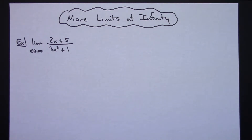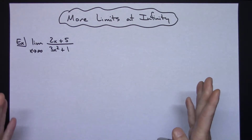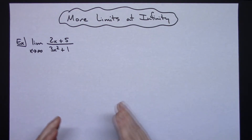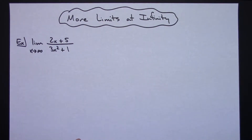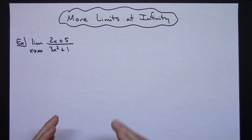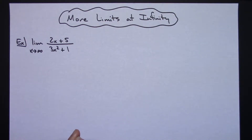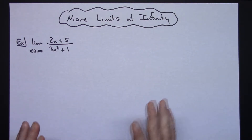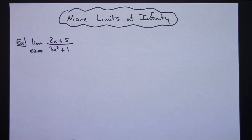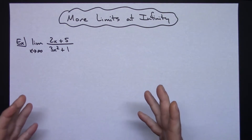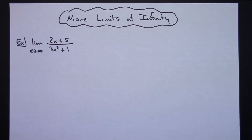In this video I'm going to take a look at just some more examples with limits at infinity. I'm going to assume that you've already been working with limits at infinity, that you know if you have a rational expression you can divide through by the highest power of x in the denominator, and that you've had some experience with this. We're just going to try a couple different examples to give you some more practice.